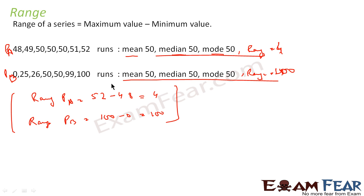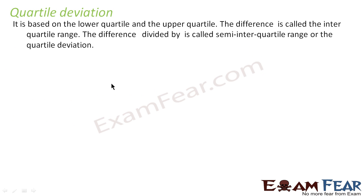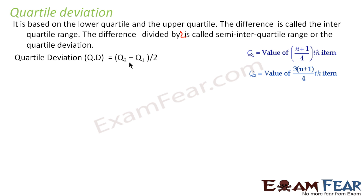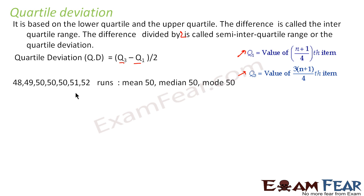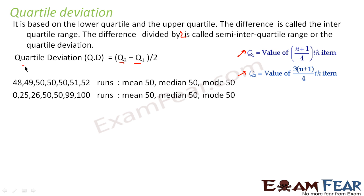Now we'll take quartile deviation. It is based on the lower quartile Q1 and the upper quartile Q3. The difference Q3 minus Q1 is called the interquartile range, and that difference divided by 2 is called semi-quartile deviation. The formula is: Quartile Deviation = (Q3 − Q1) / 2, where Q1 is the (n+1)/4 th term and Q3 is the 3(n+1)/4 th term.